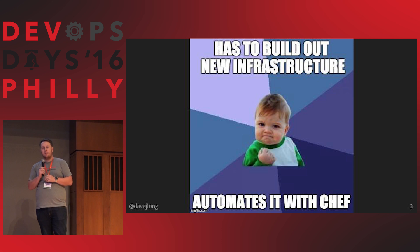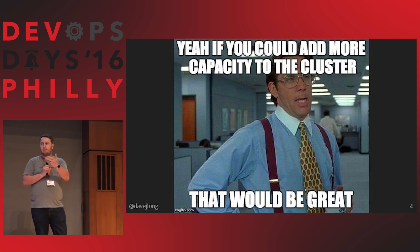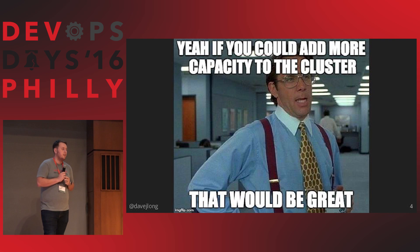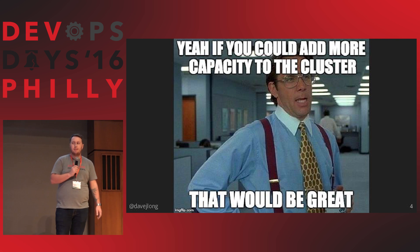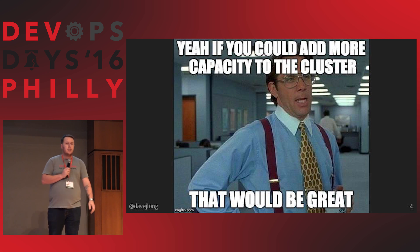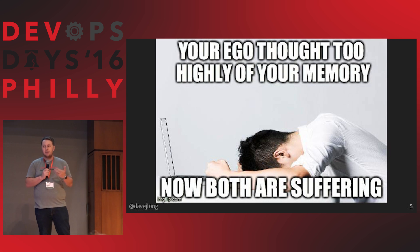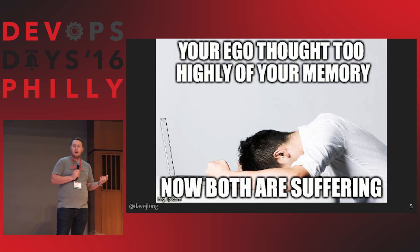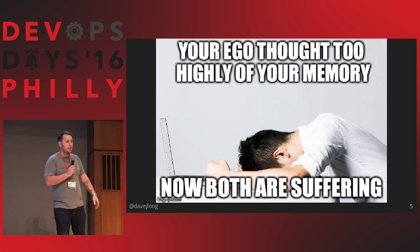Then three months later, they say we're gonna do a marketing push, we need some more scale. So let's add some more capacity to the cluster. You run all of your cookbooks again, you set up five new servers, and everything fails this time, and you don't really know why. Because the problem is that we wrote the code as if we were just gonna run it once and totally ignore it. And so we let our ego take control, and we ended up with code that we don't even remember three months later what it did.